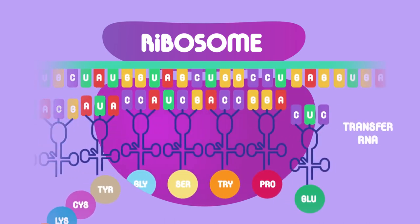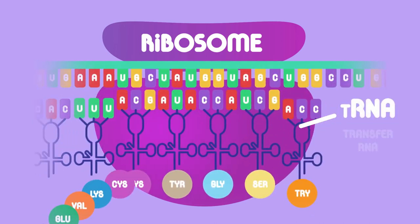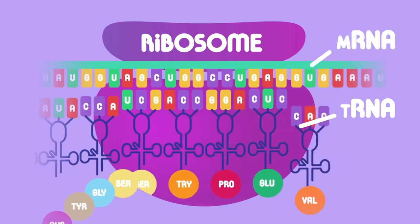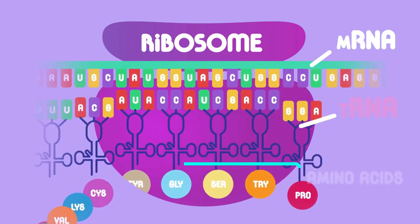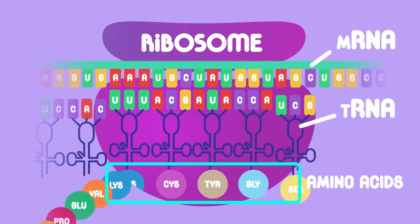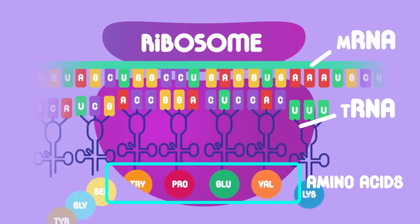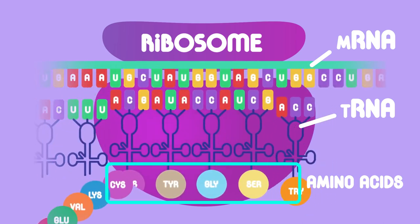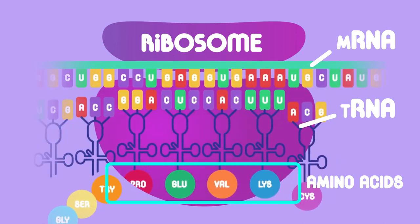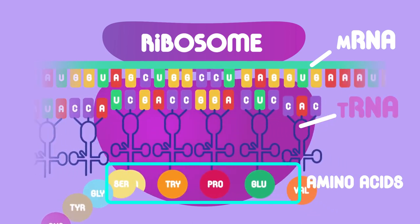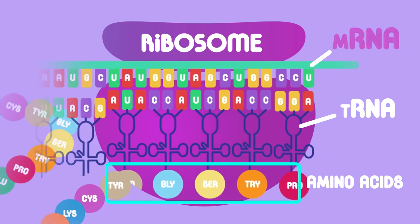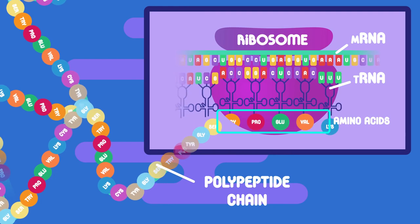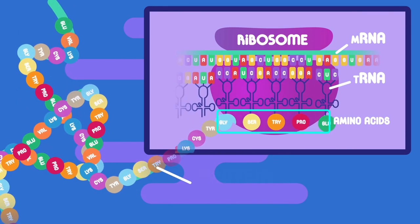Transfer RNA, or tRNA, molecules carrying specific amino acids base pair with the mRNA inside the ribosome. So the tRNA brings in the amino acids, and the mRNA provides the information of the exact order that the amino acids need to be bonded together to ensure that the correct protein is made. As more and more tRNAs match up with the mRNA, the amino acid chain becomes longer and longer, and eventually the polypeptide chain will form into the protein.